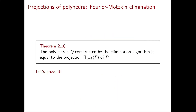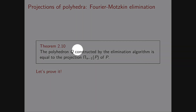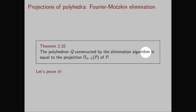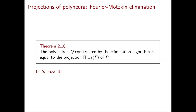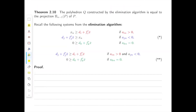Theorem 2.10 then says that the polyhedron Q constructed by our elimination algorithm is equal to the projection capital pi_{n-1} of P. Let's prove this theorem. In this theorem, we need to prove that Q is equal to the projection pi_{n-1} of P, so we're going to prove separately the two containments.